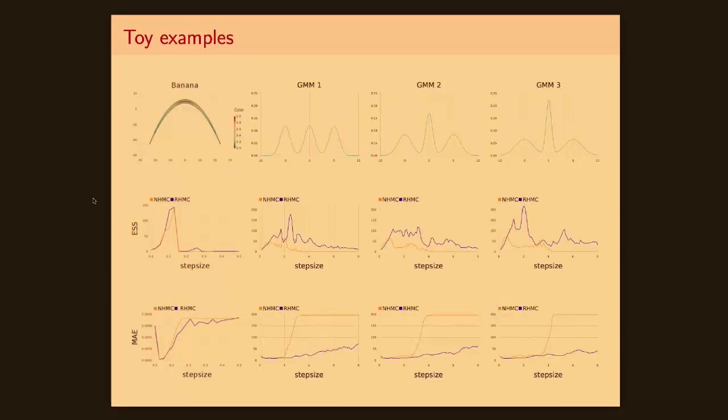So, we first looked at some toy examples to demonstrate these ideas. We have four distributions, a two-dimensional banana distribution, and three Gaussian mixture models with different variances. And we compare the ESS, the effective sample size, the higher the better, and the mean absolute error, the lower the better.